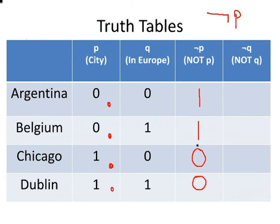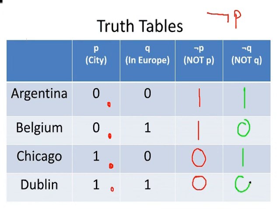Now let's do the same for Not Q — not in Europe. Argentina is not in Europe, so that is true — one. Belgium is in Europe, so we have a zero. Chicago is not in Europe — that's a one. And Dublin is in Europe, so that's a zero. Again, this column is the exact opposite of the Q column: if it's zero, switch to one; if it's one, switch to zero. And that ends our presentation.